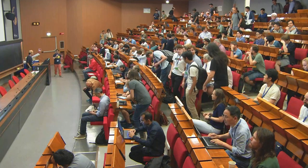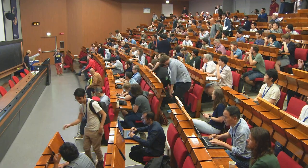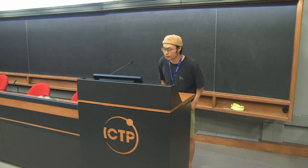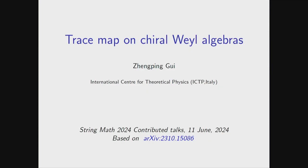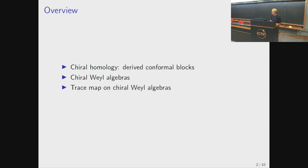Let's start again now with the contributed thoughts. The first one is by Zenping Gui: 'Trace map on the Cairo of the bio-algebra.' Thanks for giving me this opportunity to speak here. Today's talk is based on a paper on archive with the same title. I will introduce the notion of Cairo homology, known as derived conformal blocks, and explain the constructions of trace map on Cairo way algebras.